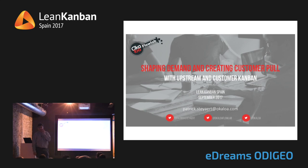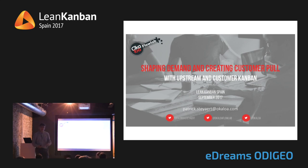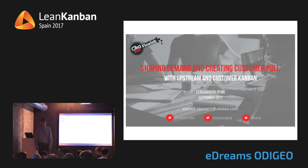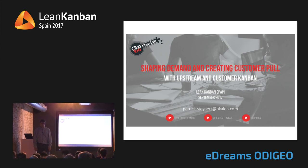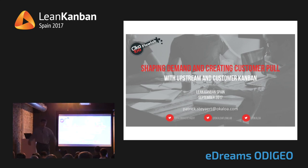I'm a two-trick pony, so I've got two tricks: one is upstream Kanban, that's what I'm going to talk about today, and the other one is Flowlab, which is an environment we're marketing in terms of having people experience flow through a business simulation. What I'm going to talk about today is shaping demand, creating customer pull — going beyond the boundaries of the team and extending it mostly towards the business and towards the customers.